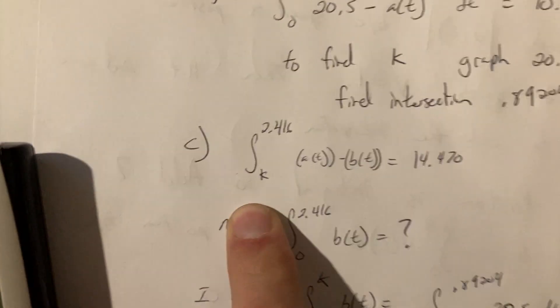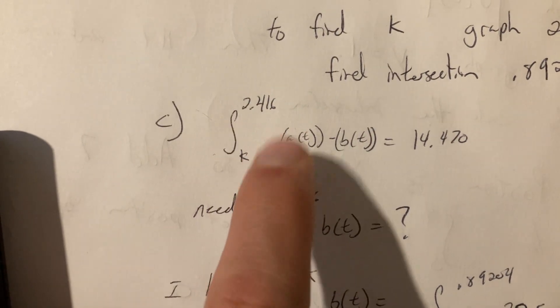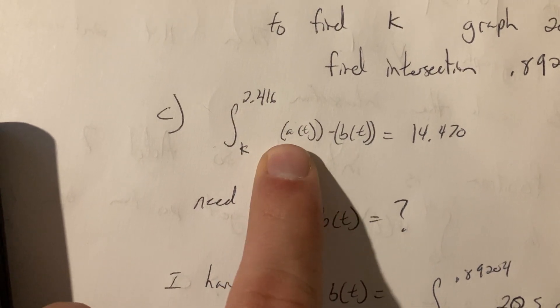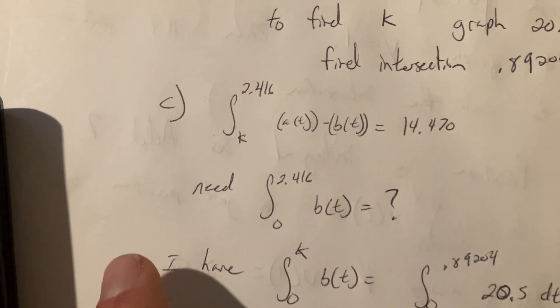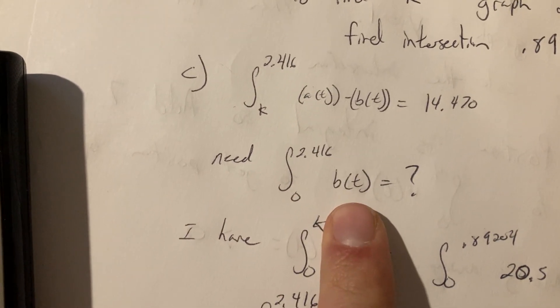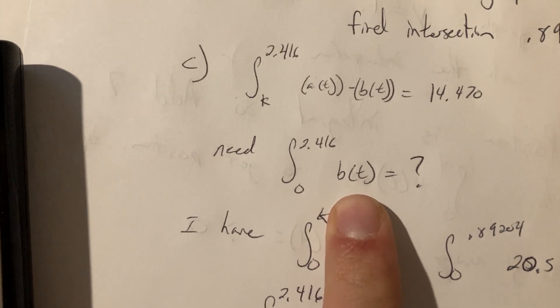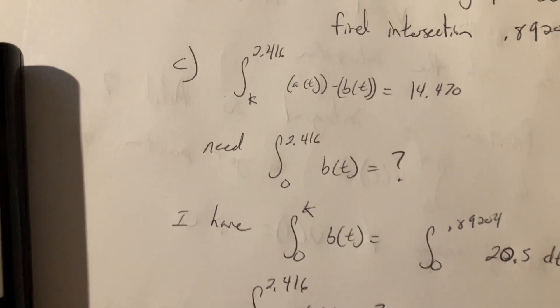Okay, we know by area bounded by two curves from K to 2.416, this one minus this one, top minus bottom, equals 14.470. What do I need? I need 0 to 2.416 of B. That's what I'm looking for, how much water is in tank B at that time. That's what I need. What do I have? I have 0 to K, I just, or at least I can find it.